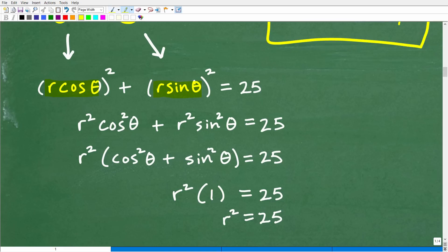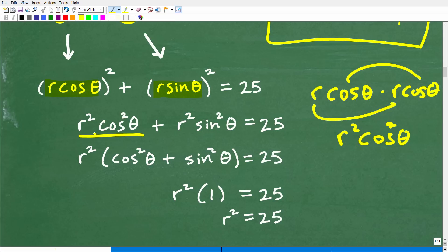r cosine theta squared is equal to r squared cosine squared theta, right? So if I had r cosine theta and I multiply by r cosine theta, r times r is r squared and cosine times cosine is cosine squared theta. So we have r squared cosine squared theta plus r squared sine squared theta is equal to 25. So hopefully you're with me. And at this point, we're going to use our algebra skills to factor out the GCF, the greatest common factor, because we have an r squared that's common right here. So let's factor out this r squared.